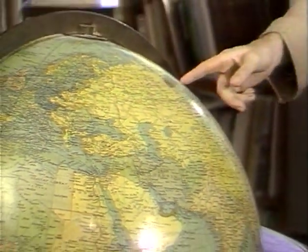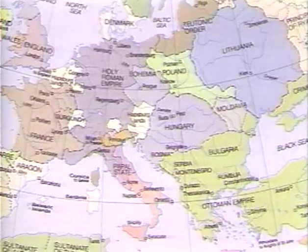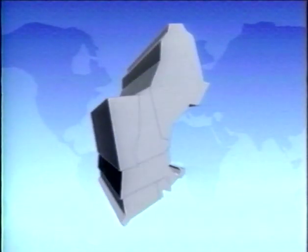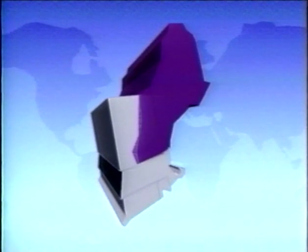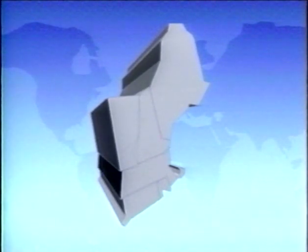Graph coloring began with a problem about maps. For centuries, it has been common practice to color maps with individual countries getting different colors. To make the borders stand out, countries with a common border should get different colors. For example, let's look at this map of New England. If two adjoining states are forced to share the same color, it's difficult to tell them apart.